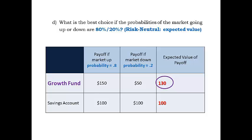A risk-neutral decision maker chooses the alternative whose expected value is best, based on the known probabilities. Expected value is a computation used as a decision-making tool. The future payoff for the growth fund will actually be $150 or $50. For any of the decision theory techniques, the future is unknown at the time the decision has to be made. Computations for decision criteria are helpful tools, but don't guarantee future outcomes.